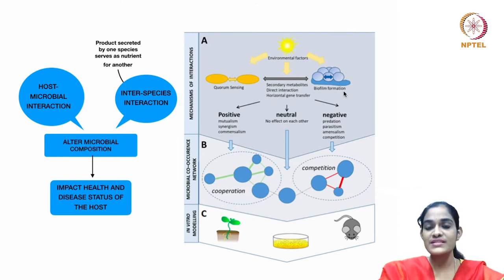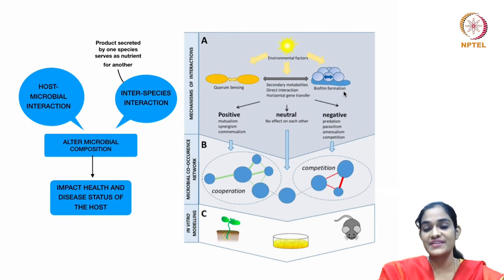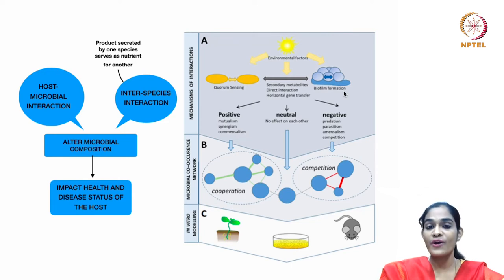The molecules present in the biofilm inherit group behavior called quorum sensing. There are three different types of interactions happening between microorganisms of different species, genus, and family: positive interactions, negative interactions, and neutral interactions. The positive interactions are mutualism, synergism, and commensalism. Mutualism is an interaction where both species are benefited, whereas in commensalism, a long-term interaction, one species is benefited while the other is neither benefited nor harmed.